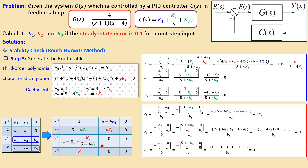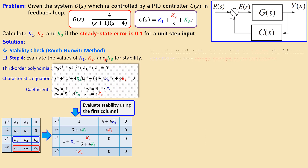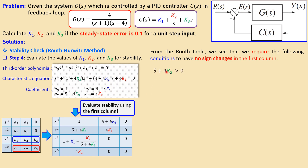Adding all computed coefficients, we get the full Routh table. For stability we evaluate the first column — step four is to check k1, k2, and k3 for stability. In order to have a stable system there must be no sign change in the first column. Since we start with a positive value, all entries must be positive. This gives us three conditions: 5 plus 4k3 must be greater than zero, 4k2 must be greater than zero, and b1 must be greater than zero.